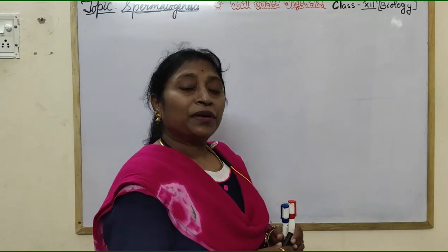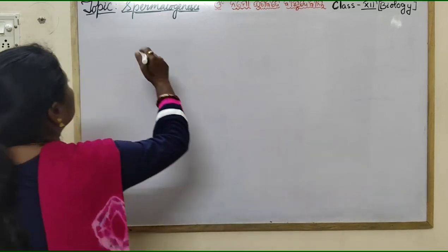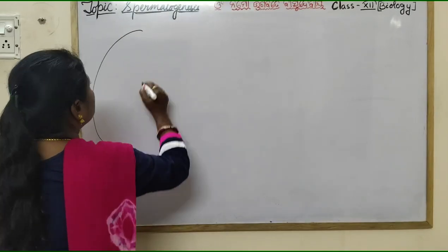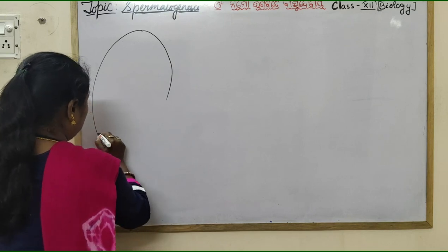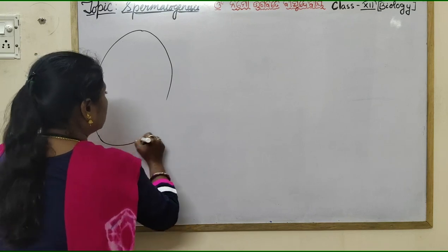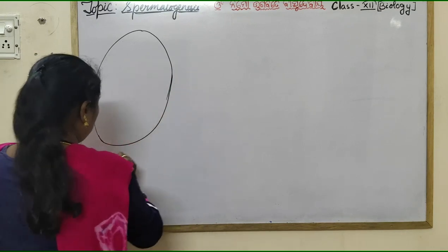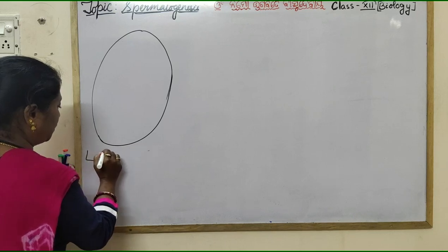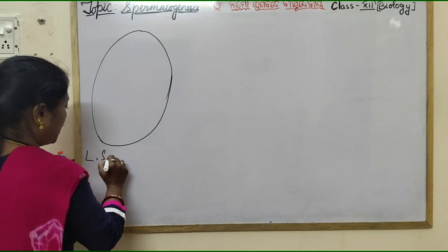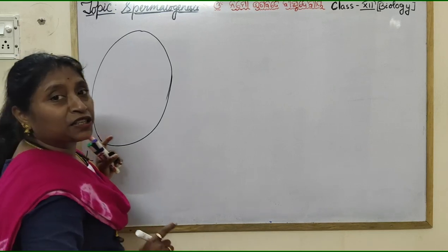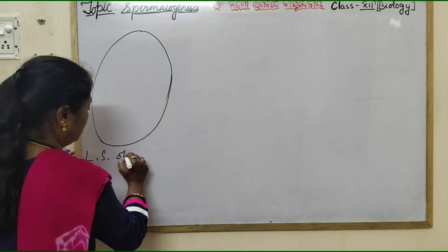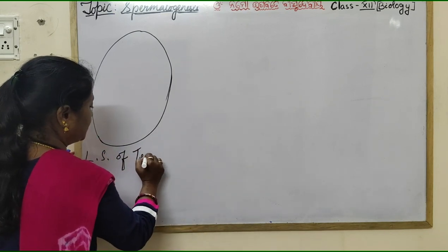Spermatogenesis occurs within the testis. Let us see what happens within the testis. This is the longitudinal section — I will show you a small portion. LS, longitudinal section of the testis.